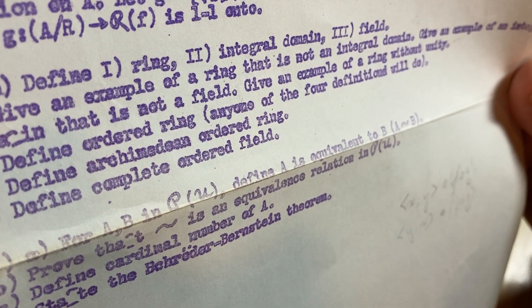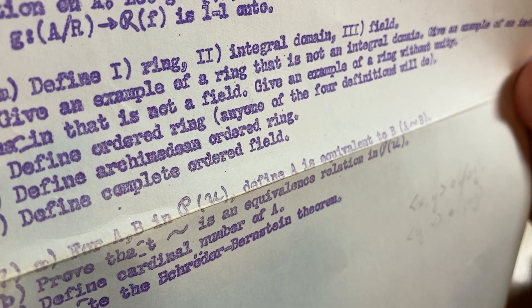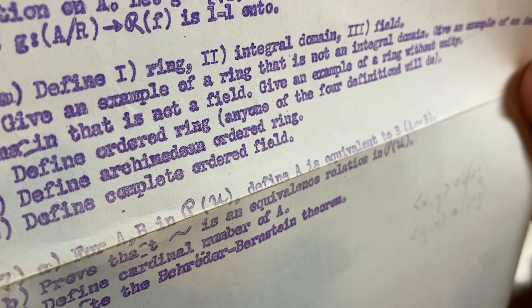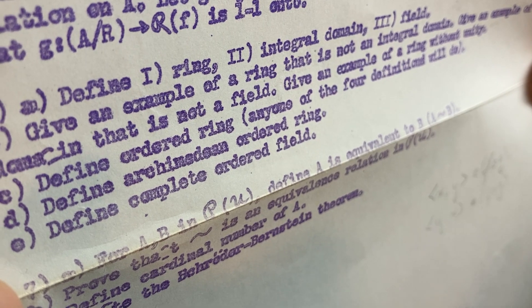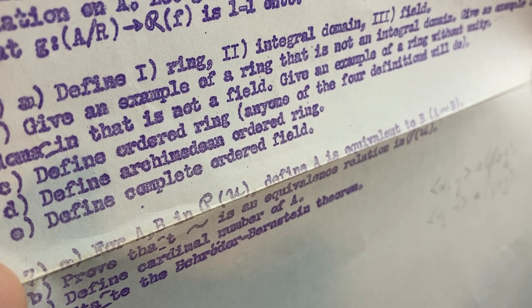And then the last one here, we have this here, something with a set. For A and B, I guess is that the power set of U? Define A as equivalent to B. If A is related to B. Yeah.